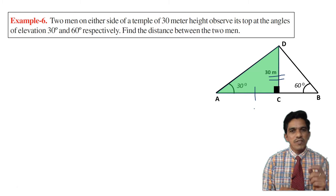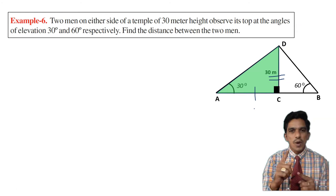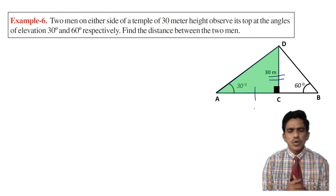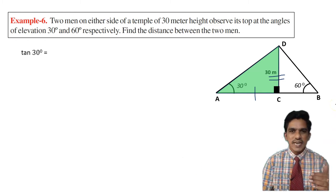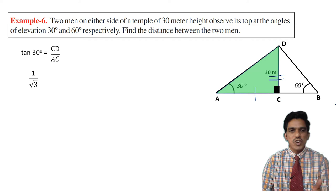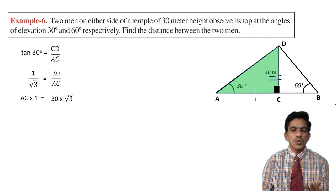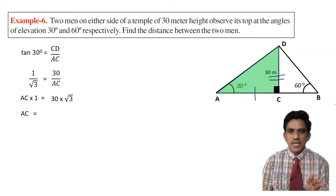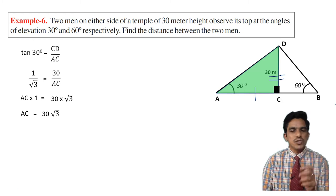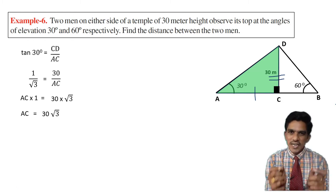Since we have opposite and want adjacent, we use tan. Tan 30 degrees equals opposite over adjacent, which is CD over AC. Tan 30 degrees equals 1 over root 3. So 1 over root 3 equals 30 over AC. Cross-multiplying: AC times 1 equals 30 times root 3. Therefore AC equals 30 root 3.